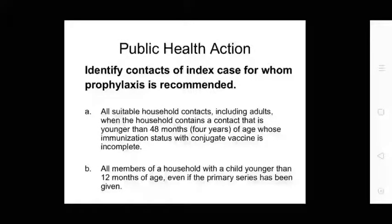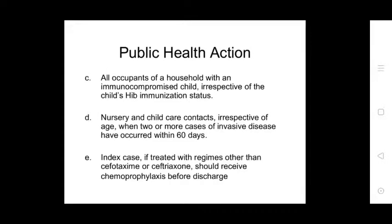Identify contacts of the index case. Prophylaxis is recommended for all household contacts including adults when: the household contains a contact younger than 48 months (four years) whose immunization status with conjugate vaccine is incomplete; all members of a household with a child younger than 12 months even if the primary series has been given; all occupants of a household with an immunocompromised child regardless of immunization status; and nursery and child care contacts when two cases of invasive disease have occurred within 60 days.